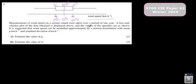So let's go ahead and read what they're asking us to do. This is the measurement of wind speed on a certain island taken over a period of one year. A box-and-whisker plot of the data obtained is displayed above, and the values of the quartiles are as shown. It is suggested that the wind speed can be modeled approximately by a normal distribution. This is really important. You'll see why in just a second.